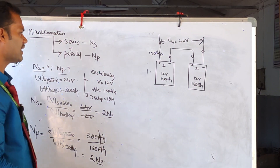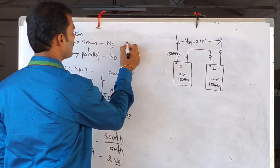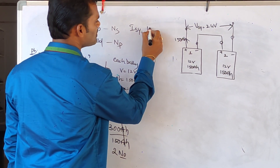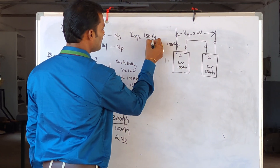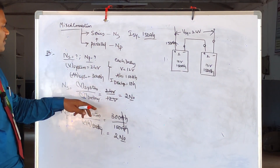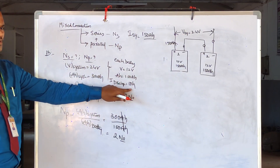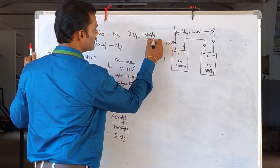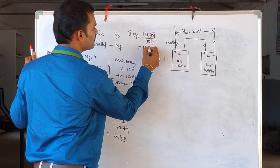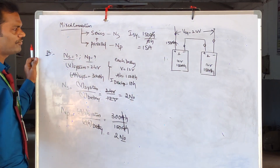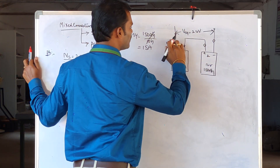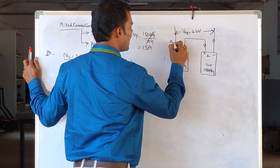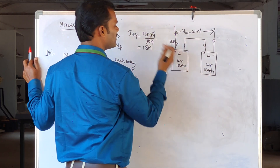To calculate the current from this series set: current equals AH capacity divided by time. That is 150 AH divided by 10 hours, which gives 15 Amperes. So each series set supplies 15 Amperes of current.